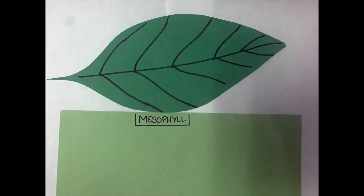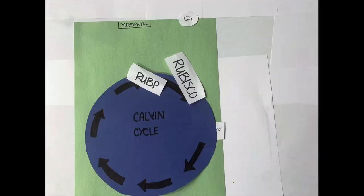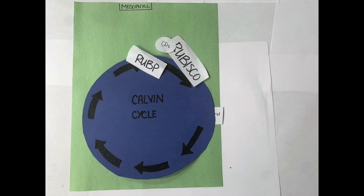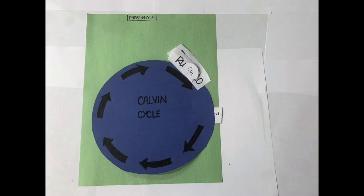C3 photosynthesis occurs in the mesophyll cells under the surface of leaves and other tissues. It begins by taking carbon dioxide to the Calvin cycle. This is where initial fixation of carbon occurs when the enzyme rubisco adds carbon dioxide to RUBP.